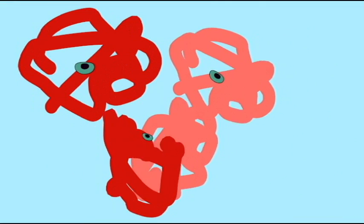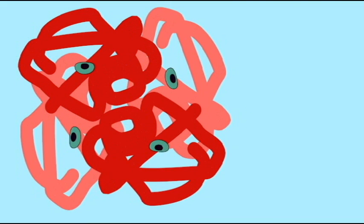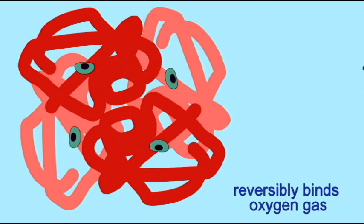When we speak of hemoglobin in red blood cells, it is this structure which we are speaking of: a large protein with four subunits, two alpha globins and two beta globins. This is the hemoglobin in red blood cells.